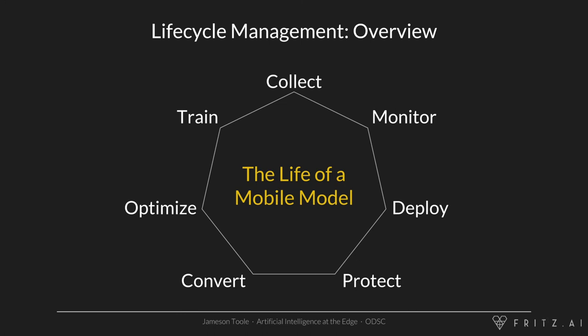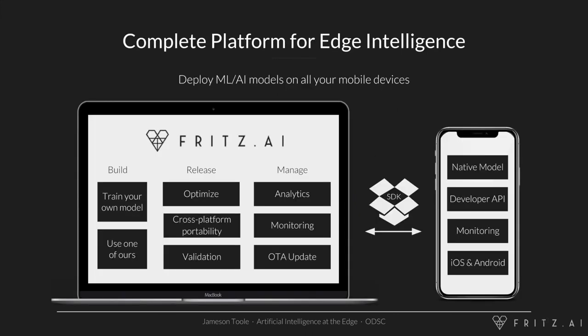That's all I've got for the life of a mobile model. I hope you've learned something about how to actually do each one of these steps with edge computing in mind. If you just want to get started right away and don't want to build all of this stuff yourself, we are building a complete platform for edge intelligence here at Fritz — all of these steps are available through the Fritz web app and the Fritz SDK. Please go to fritz.ai and sign up, or email us at info@fritz.ai and we'll be happy to answer any questions.